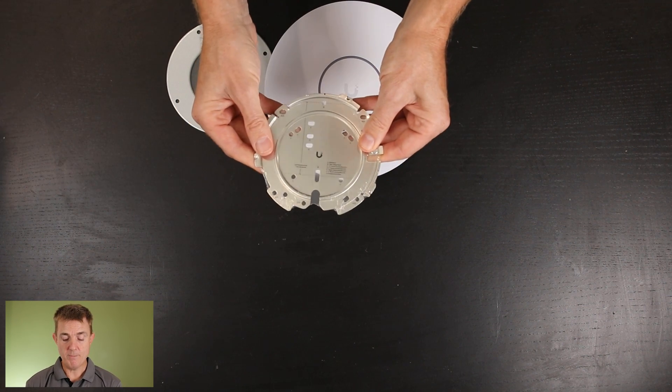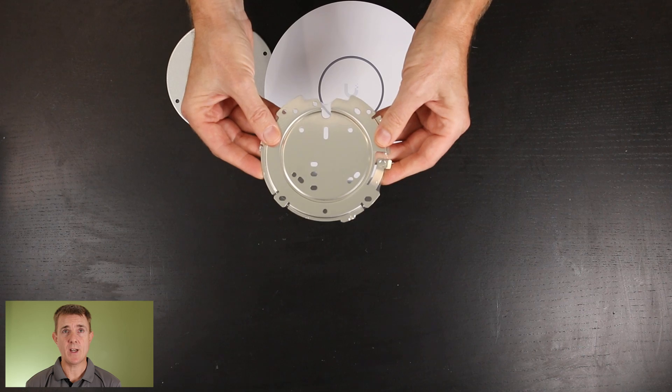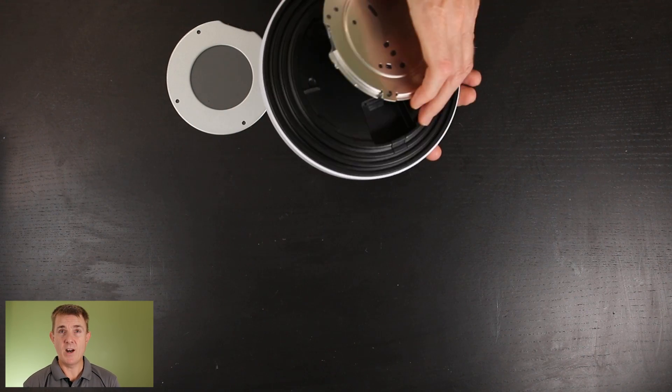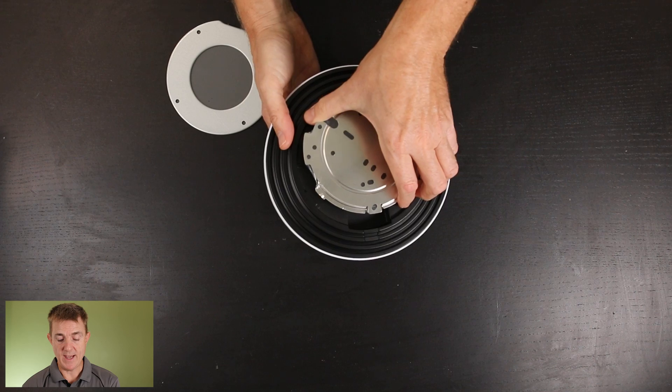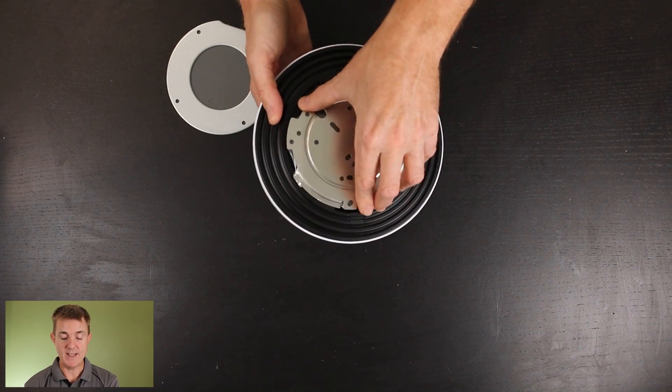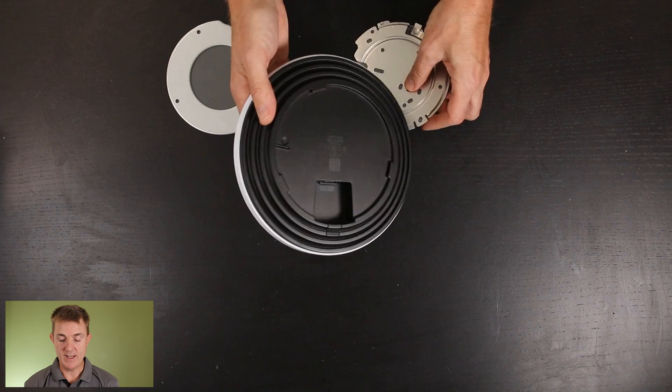So this is our universal mount. The idea is we obviously screw that up onto the ceiling like that. When that's in place, then we bring our access point up to that and we can actually turn this round and lock it into place and that holds it then in place.